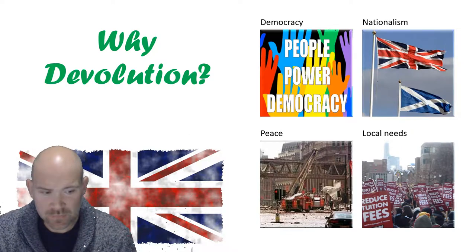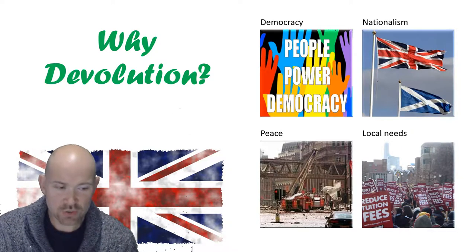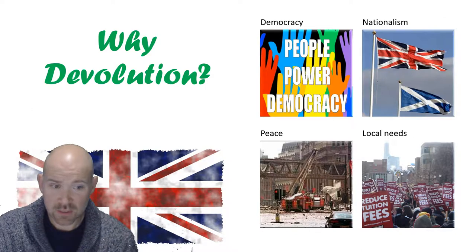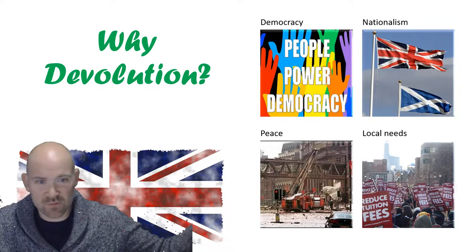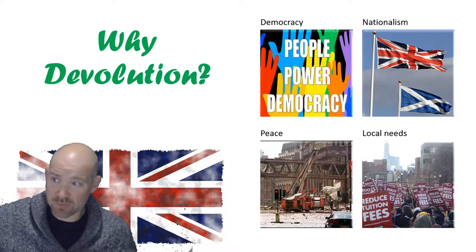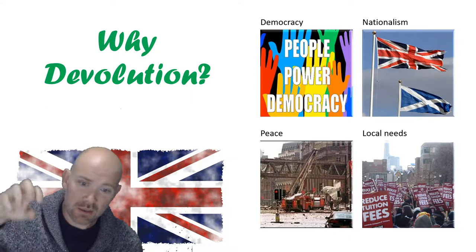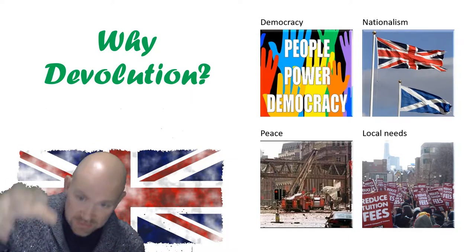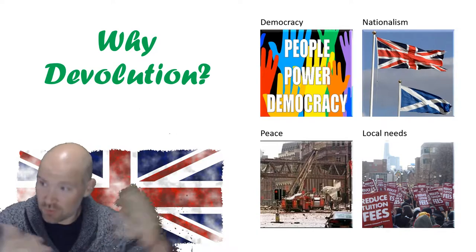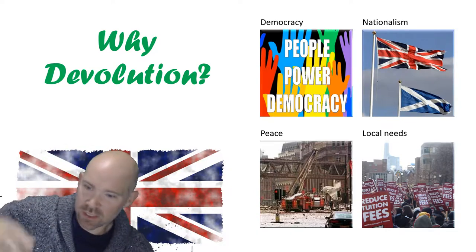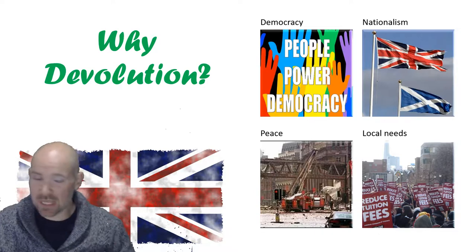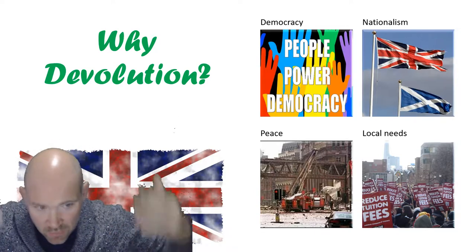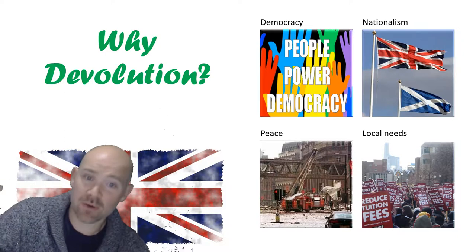The last reason was local needs. By having a Scottish Parliament, it can make laws and policies that actually benefit just Scotland — and the same in Wales and Northern Ireland. Rather than having a big national government making policy that benefits as many people as possible but might leave out certain regions, a local regional parliament can make decisions that benefit just that area. Because what benefits the countryside in England isn't necessarily going to benefit the cities in Scotland, or what benefits London is not going to be the same as what's needed in Northern Ireland. So it allows local needs to be addressed in a democratic way.